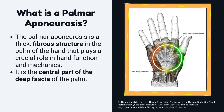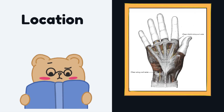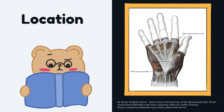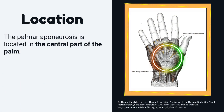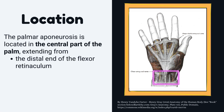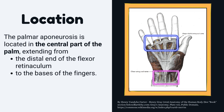It is the central part of the deep fascia of the palm. The palmar aponeurosis is located in the central part of the palm, extending from the distal end of the flexor retinaculum to the bases of the fingers.